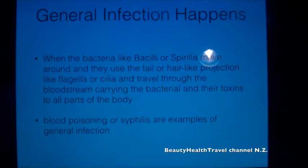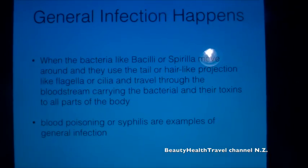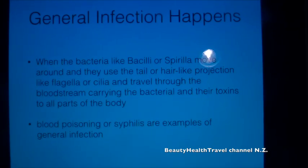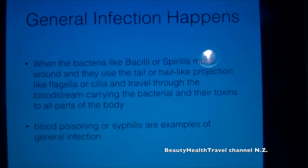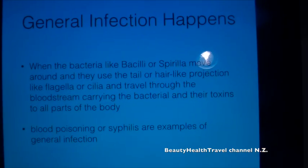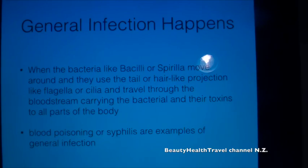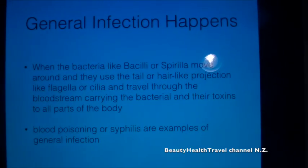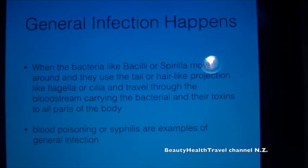General infection happens when bacteria like bacilli or spirilla move around using a tail or hair-like projection like flagella or cilia, and travel through the bloodstream, carrying bacteria and their toxins to all parts of the body. Blood poisoning or syphilis are examples of general infection.